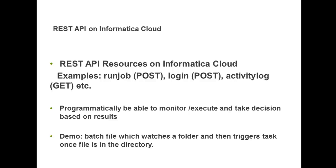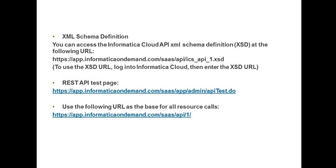A few things to know about the Informatica Cloud REST API: the XML schema definition — the REST API will send a response in XML or JSON format. For the XML format, we can use the XSD to parse these XML messages and process them downstream for any programmatic decisions based on responses. The URL for the XSD is mentioned here. We also have the Informatica Cloud REST API test page, which gives information about all resources and helps us test our REST API calls outside of a batch file first.